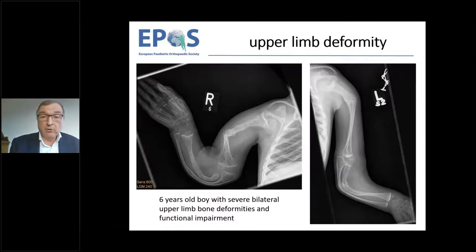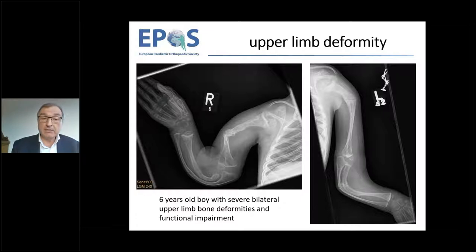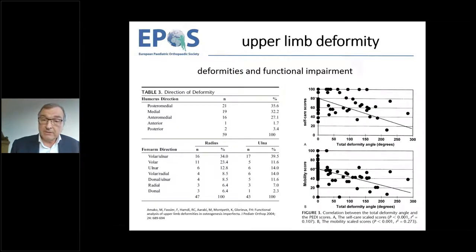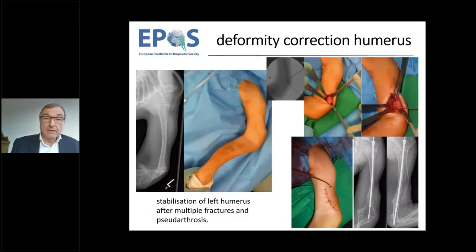When we talk about upper limb deformity in OI we enter difficult terrain. This six-year-old boy with severe bilateral upper limb bone deformities has functional impairment. Functional impairment and deformity are well linked — the total deformity angle correlates with self-care and mobility scores. The more deformed the arm, the less function there is, meaning deformity correction is appropriate.